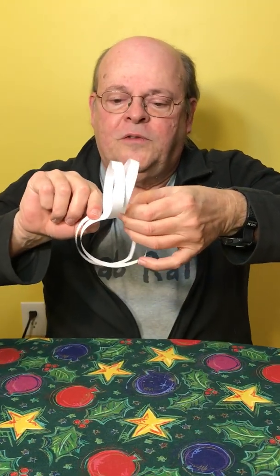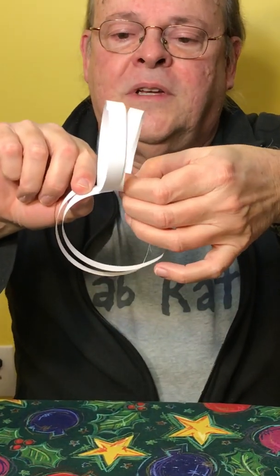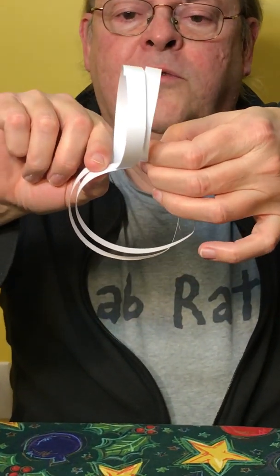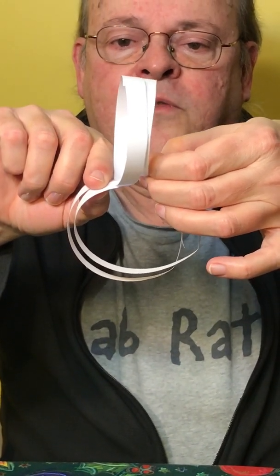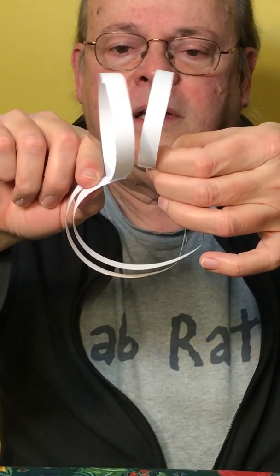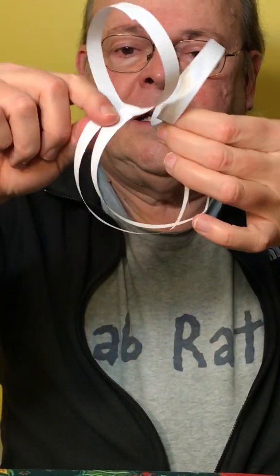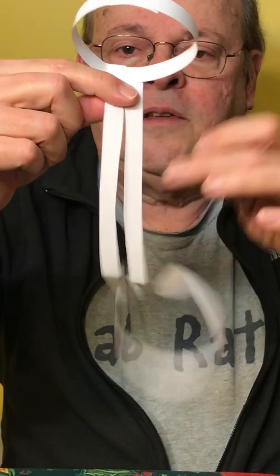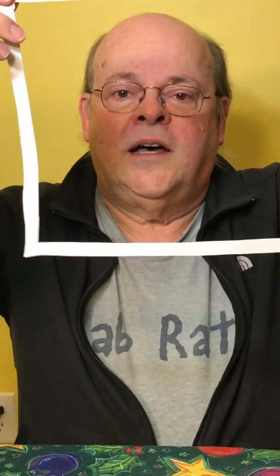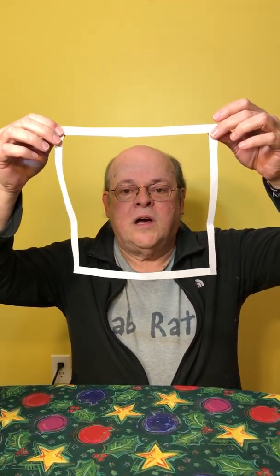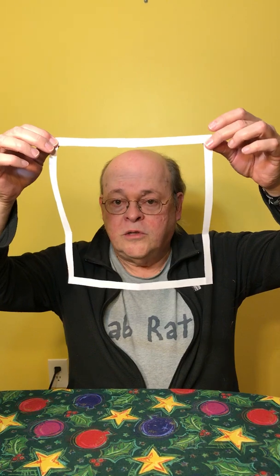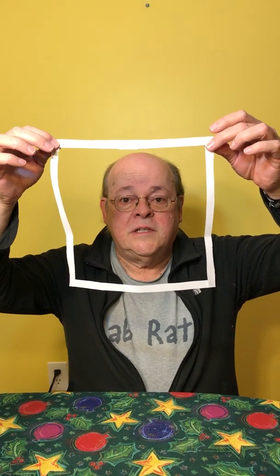You see what happened? They were glued to each other, then I cut the first one and separated it, and then I separated the second one, and that's how I got a square. If you want to learn more about objects that are topologically equivalent,